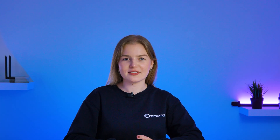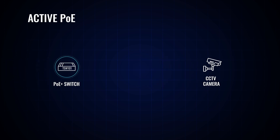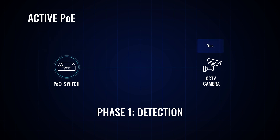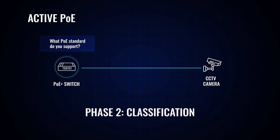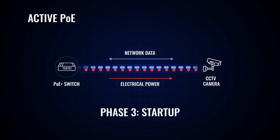So when you connect an end device like a CCTV camera that supports active PoE to a PoE switch, the switch will first send a signal to the CCTV camera asking whether it can be powered through an Ethernet cable. If the CCTV camera does support active PoE, it lets the switch know. This leads the switch to ask what kind of power standard and voltage range the CCTV camera supports. Only when the CCTV camera discloses what kind of power standard it supports will our switch with active PoE provide the camera with the exact amount of power the device needs.